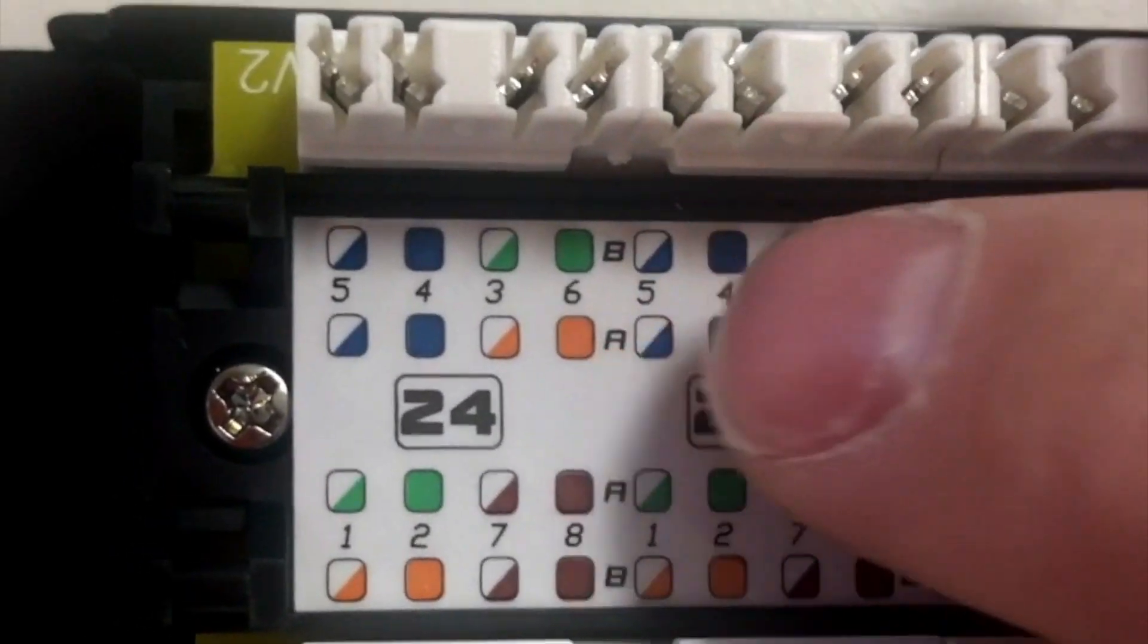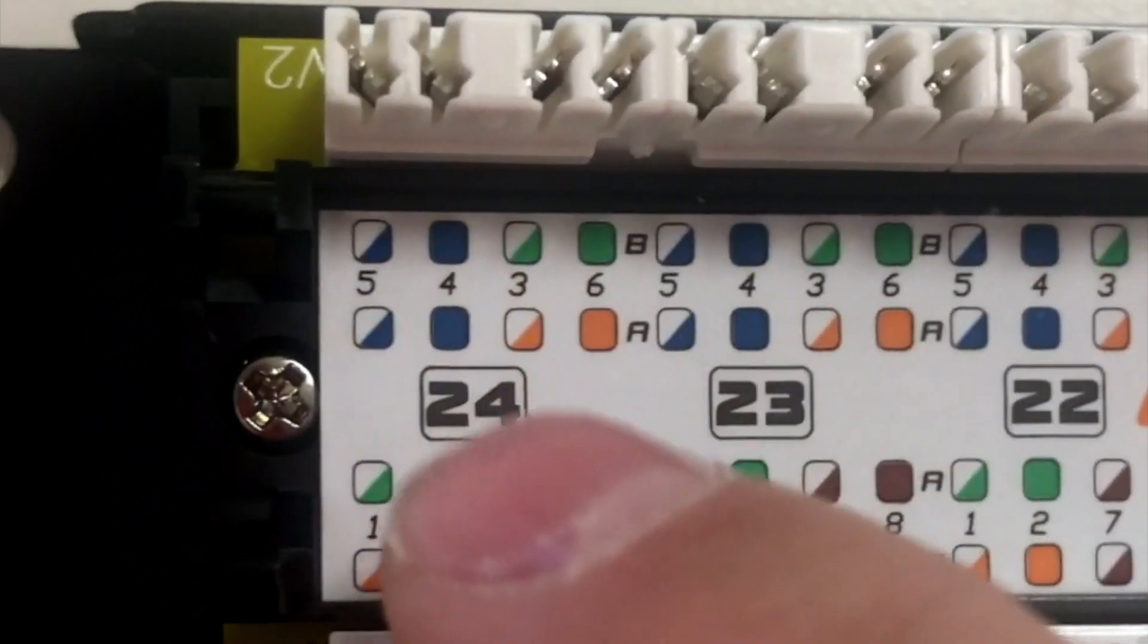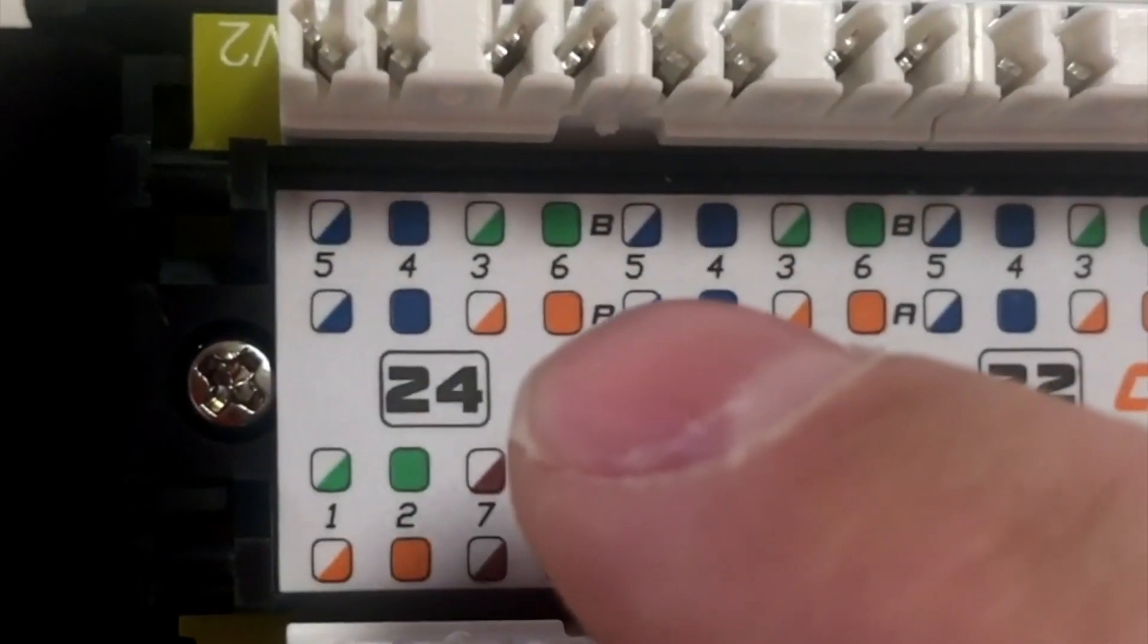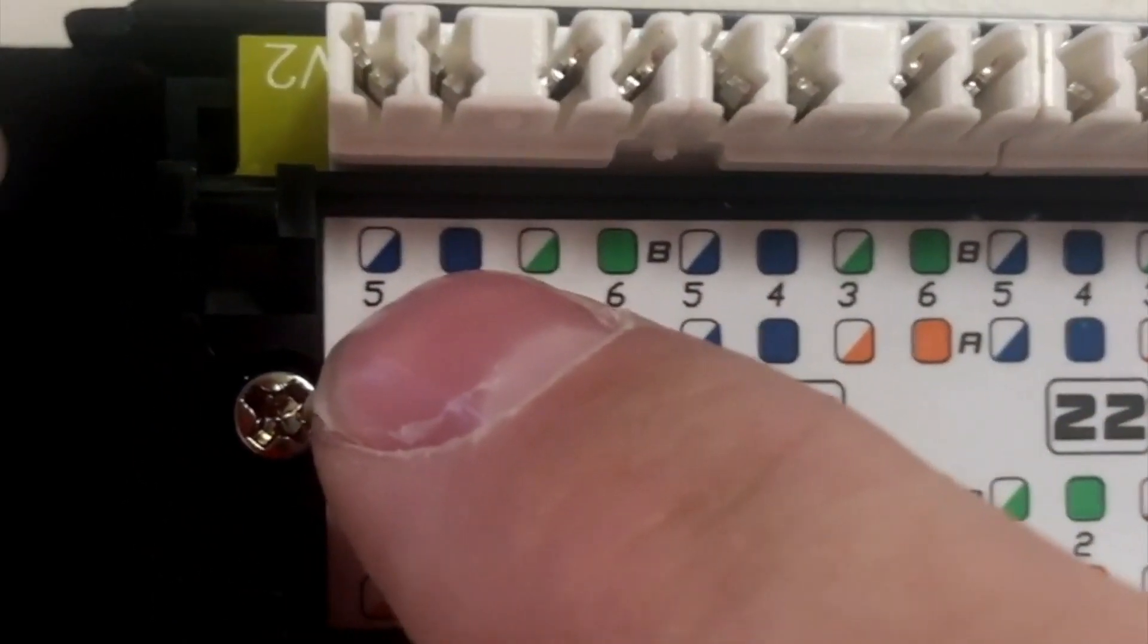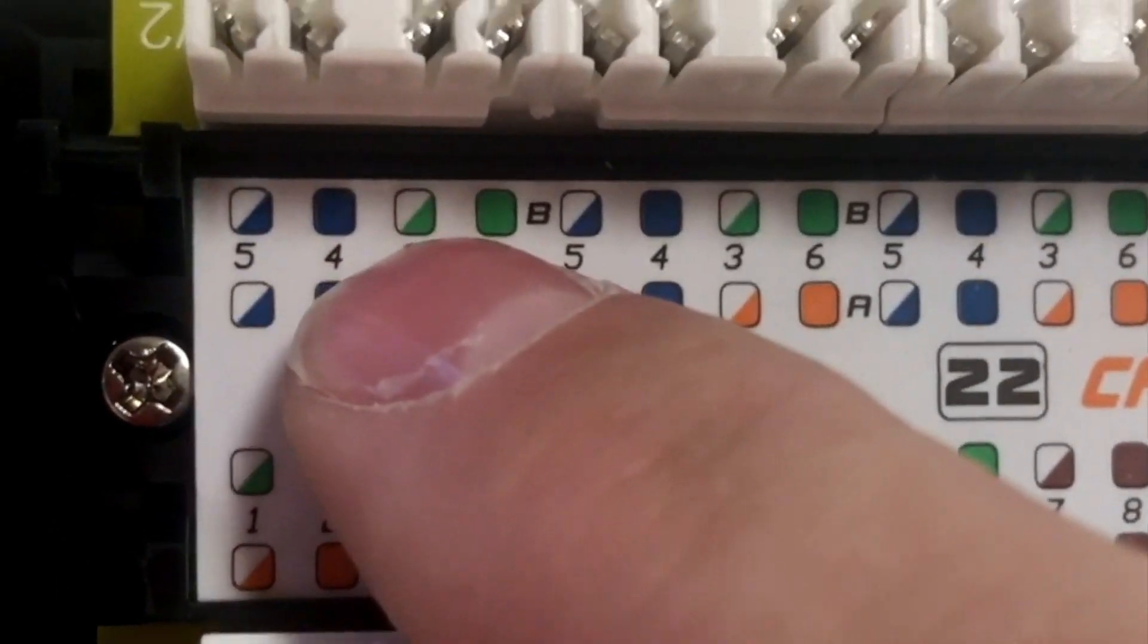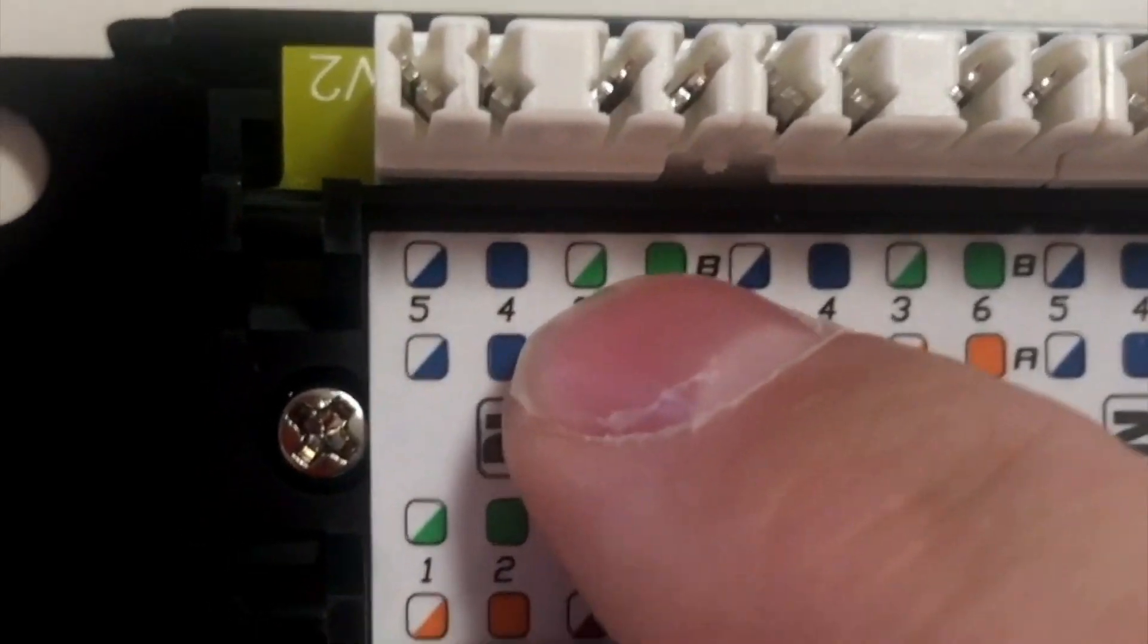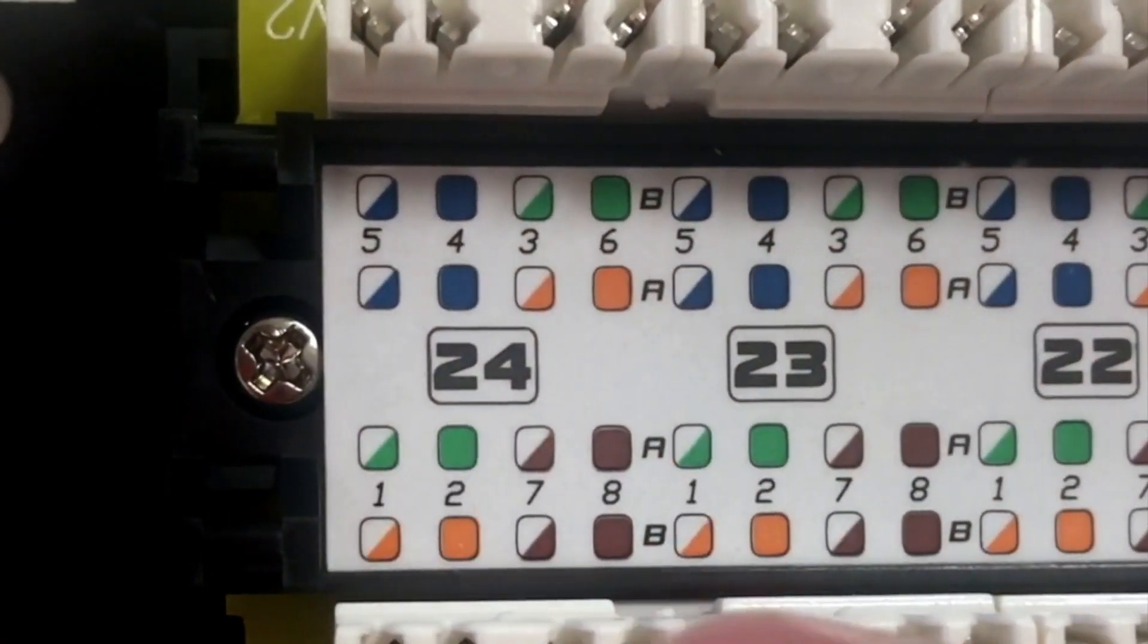Each port is numbered with a corresponding color-coded diagram to make punch-down easy and intuitive. Here's an example. Port 24 has a color code which lines up to its corresponding pin and matches the color of the wire: striped blue, blue, striped green, green, and so on.